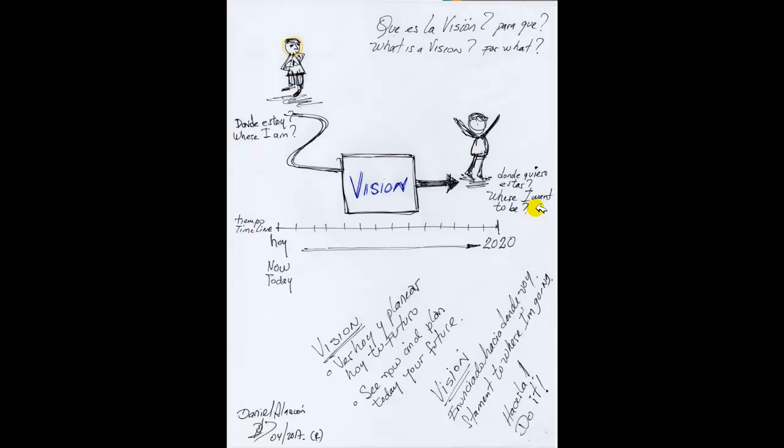We must have our vision for the following three or four years. Where I want to be. Where I want to be in that period. And the key is that I can see myself now as if my vision has occurred already.